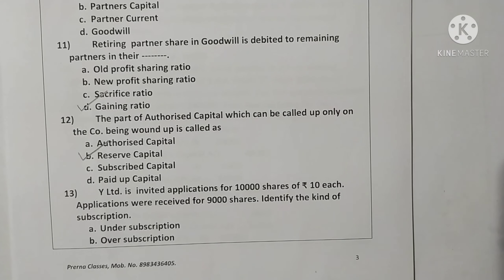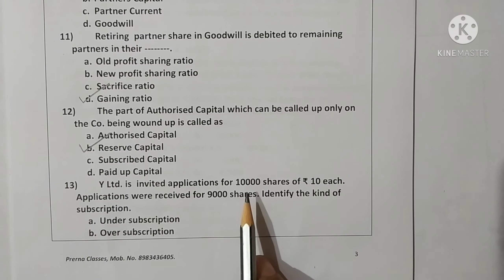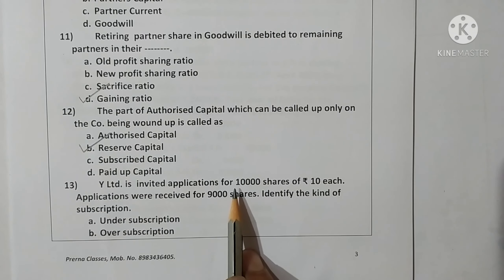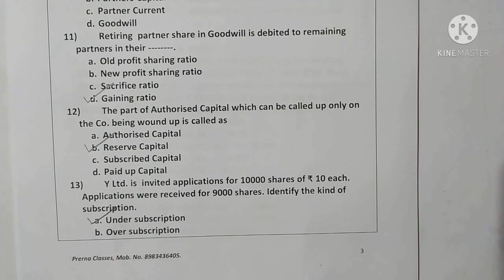Question twelve: the part of authorized capital which can be called up only on the company being wound up is called reserve capital. Option B is correct. Question thirteen: White Limited invited applications for 10,000 shares of Rs. 10 each; applications were received for only 9,000 shares. Since fewer applications were received, this is under-subscription. Option A is correct.